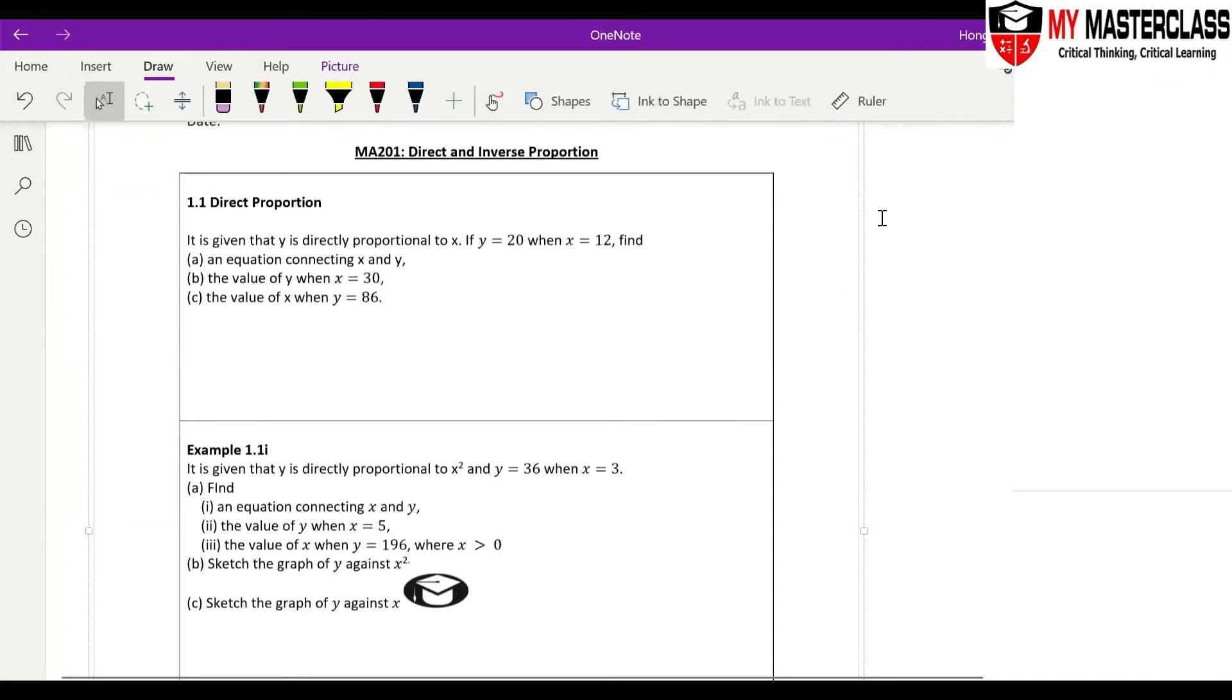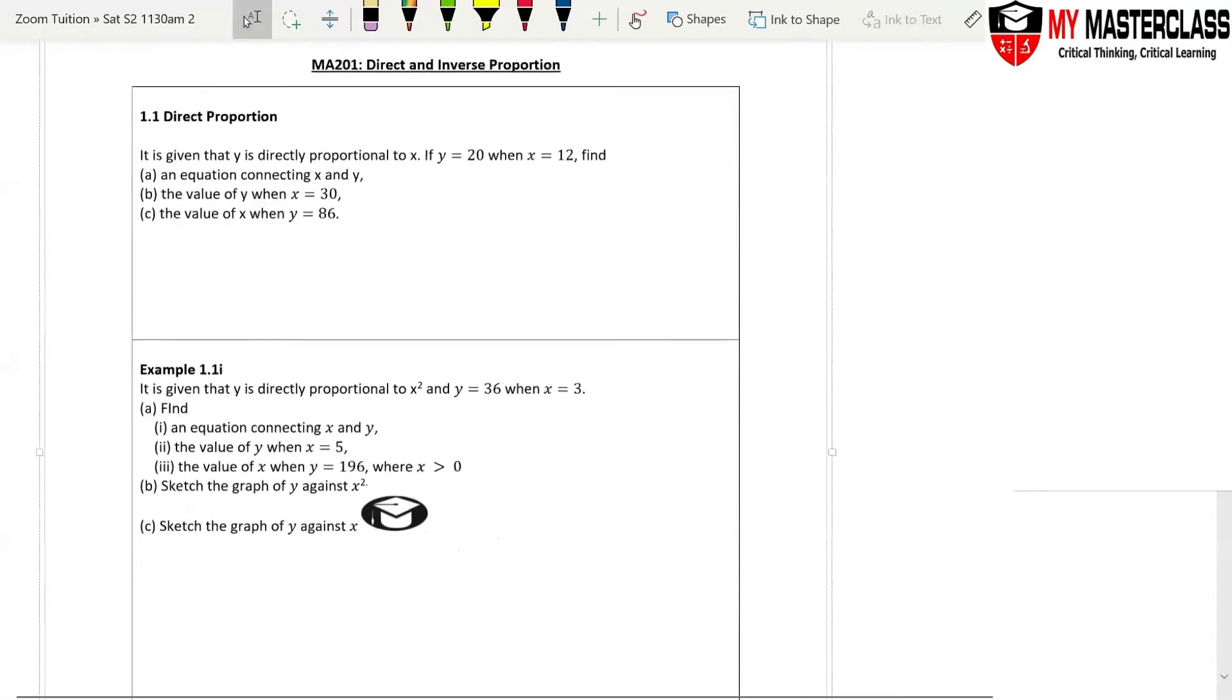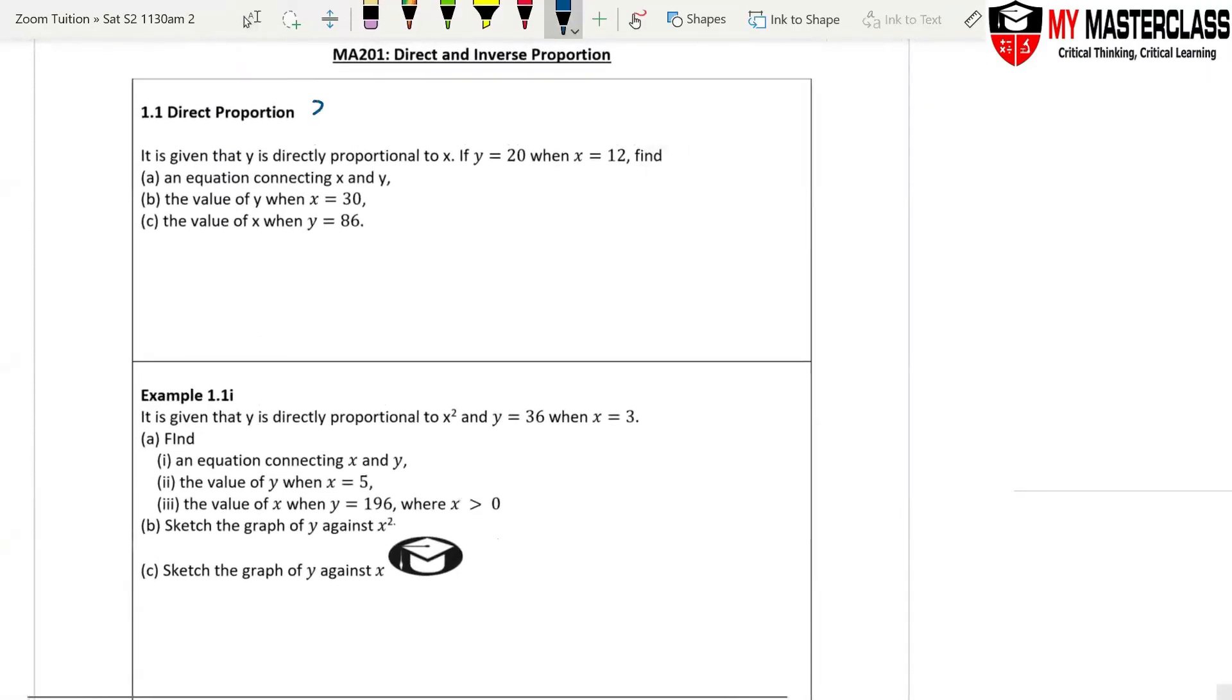Direct Proportion means if x increases, y will also increase. It is given that y is directly proportional to x. So the first thing is, once you see this word directly proportional, you have to write this: y equals kx, where k is a constant. Write this down.